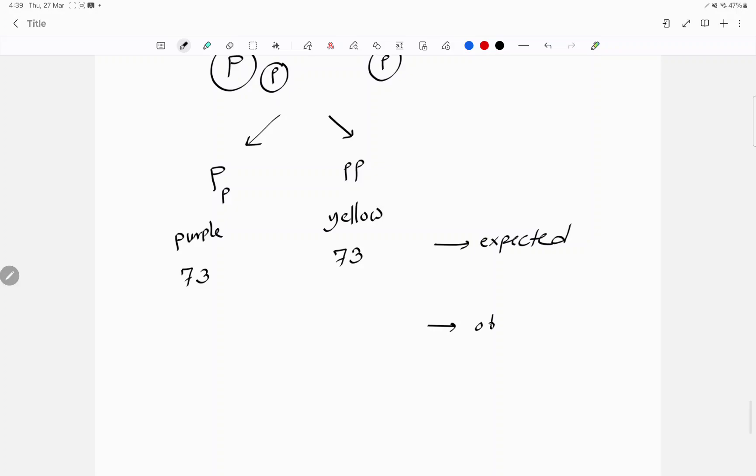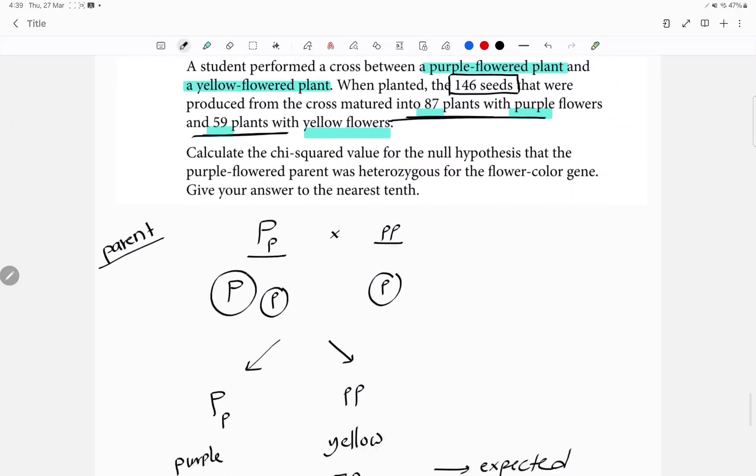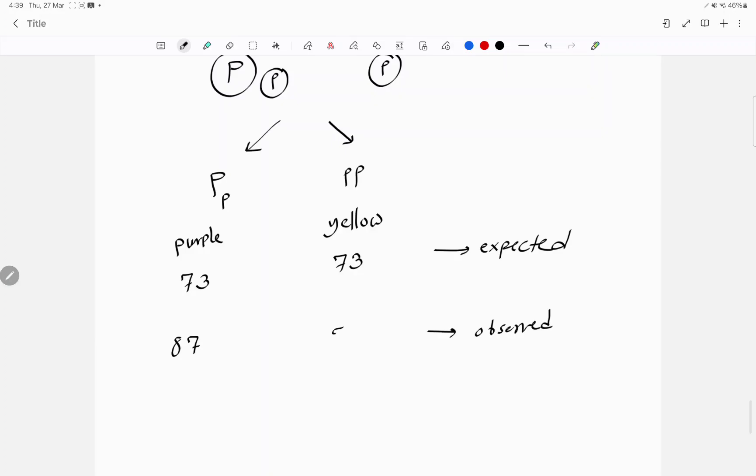But we are actually observing something else. We are observing 87 purple and 59 yellow. So the observed is 87 purple, 59 yellow.